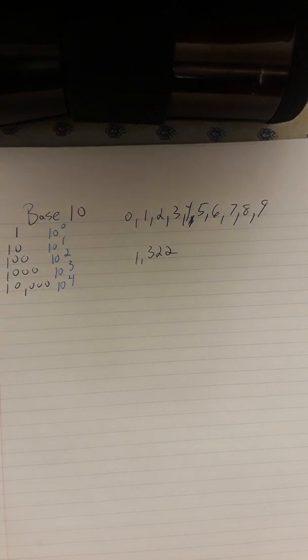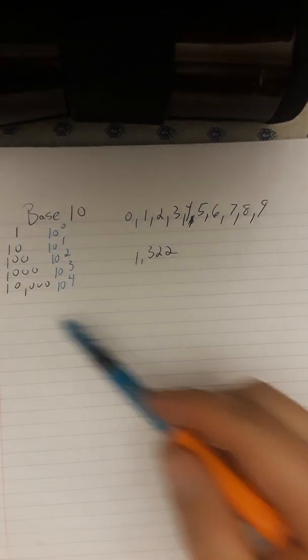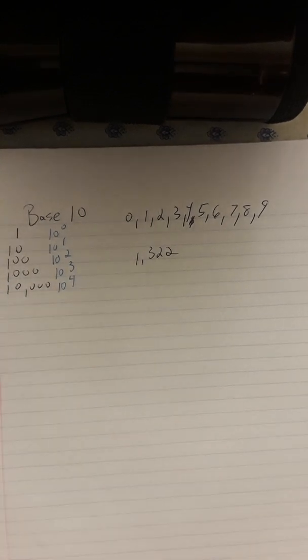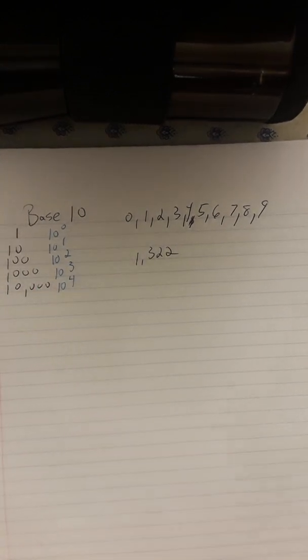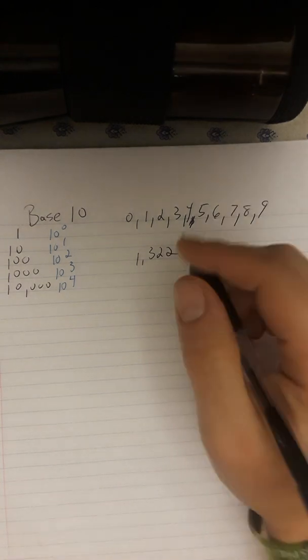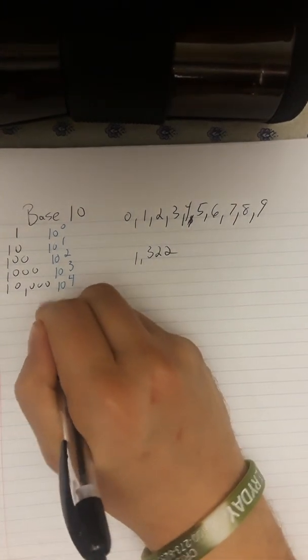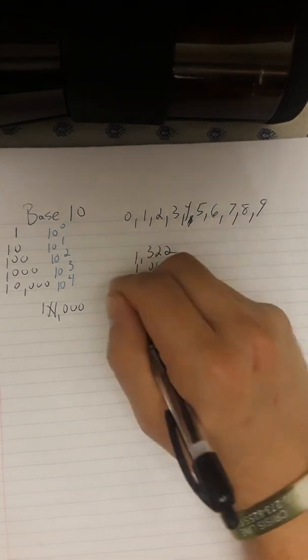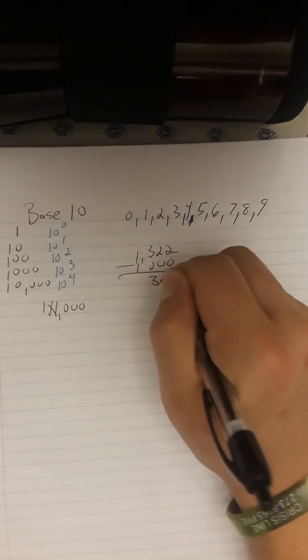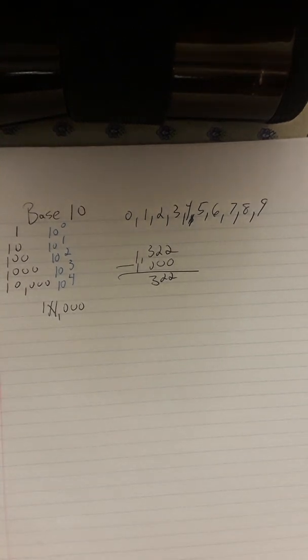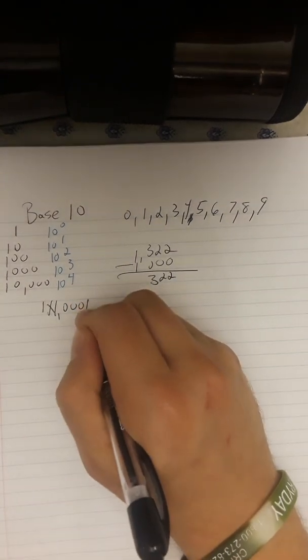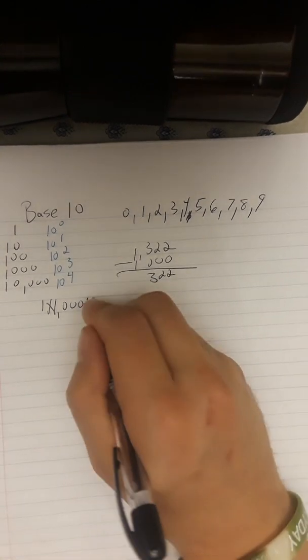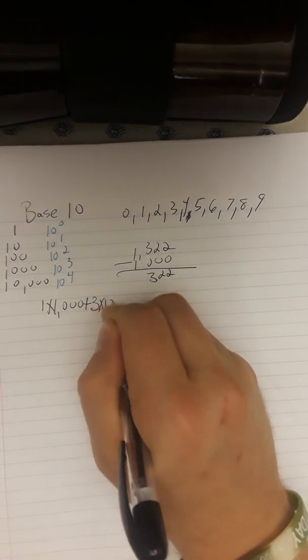So we are going to break this number down according to the placements. Does it have any 10,000s? Nope. We're going to go next to 1,000. So there's one 1,000 there. I'm going to write 1 times 1,000. So we're going to subtract this and end up with 322. Next, we're going to add how many hundreds? There's three of them. So 3 times 100.